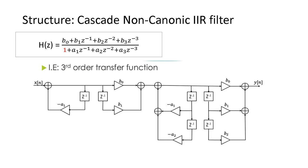For cascade canonic IIR filter, the term canonic means sharing the same delay for numerator and denominator. The cascade canonic structure is similar to Direct Form II, but now separated into blocks — one for first order and one for second order. The straight line beside the summing node still represents the denominator part, and minus signs differentiate denominator coefficients. For cascade non-canonic IIR filter, non-canonic means delays are not combined — numerator and denominator each have their own delay for both the first order and second order sections.